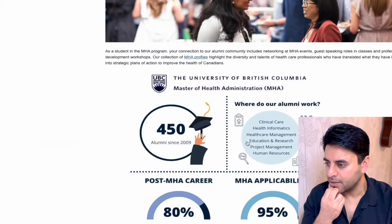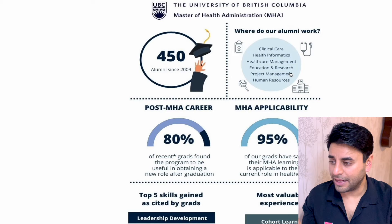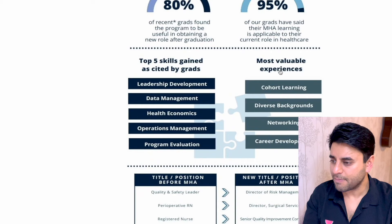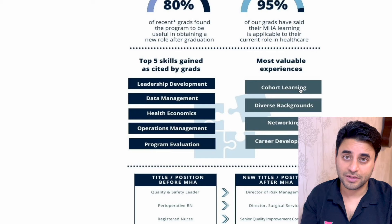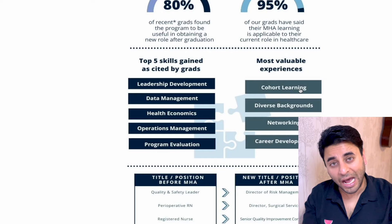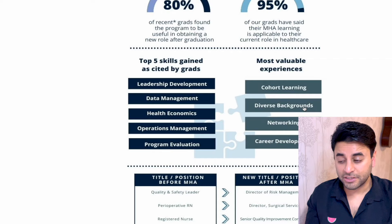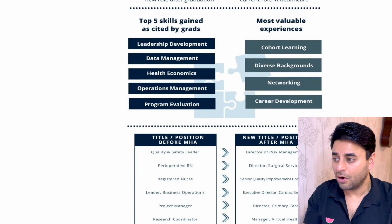UBC's MHA outcomes overview: 450 alumni have graduated, working in clinical care, health informatics, healthcare management, education research, project management, human resources, and more. The most valuable experience is cohort learning, which international students can struggle with since many healthcare schools in India don't emphasize that environment. Peer evaluation, diversity, and networking and career development are key benefits. Skills gained include leadership, data management, health economics, operations management, and program evaluation.